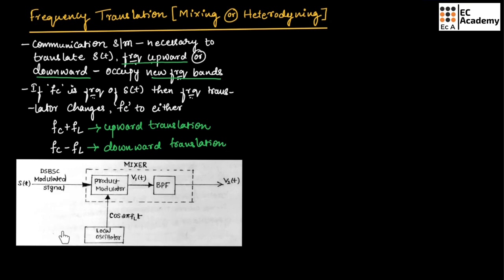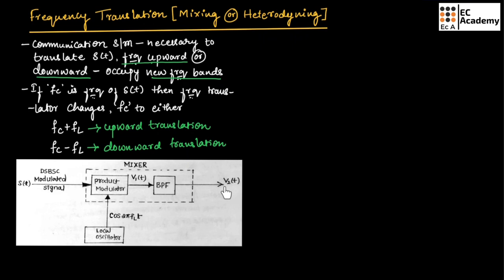The frequency translation can be achieved using a product modulator followed by a bandpass filter, as shown in this figure. The DSBSC signal or modulated signal is passed through a mixer to obtain the frequency translation. The mixer consists of a product modulator and a bandpass filter. The product modulator multiplies the DSBSC signal with a carrier signal produced by a local oscillator to produce the signal V1(T). This V1(T) is passed through a bandpass filter to obtain V2(T), which is a frequency translated signal.